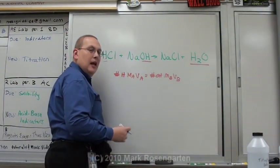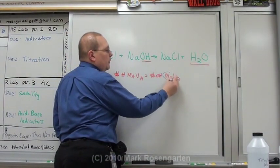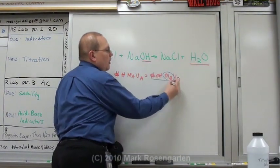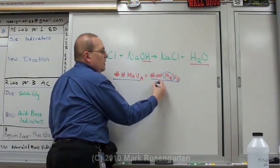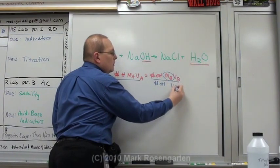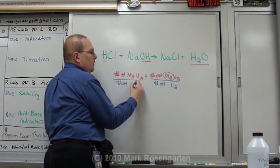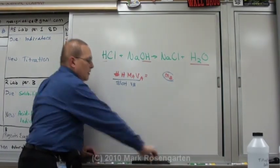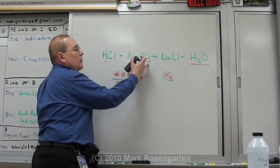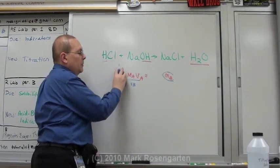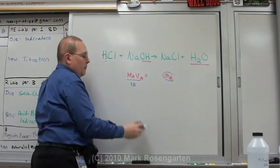In this particular lab, we're trying to find out what the molarity of the base is. So to figure that out, we're going to divide both sides by the other stuff. Number of OH is VB. Since the number of hydrogens and hydroxides are the same, they just simply cancel out. We don't have to worry about them.